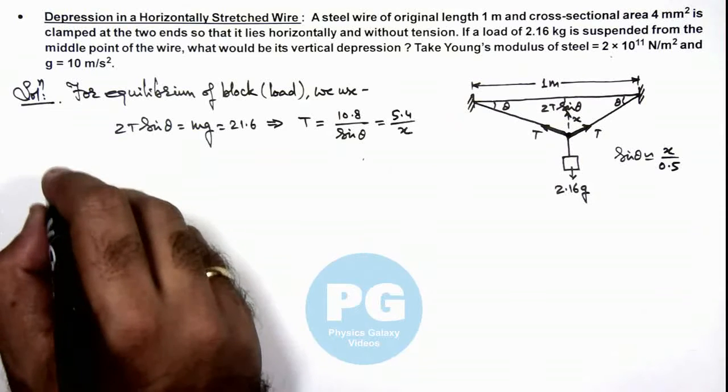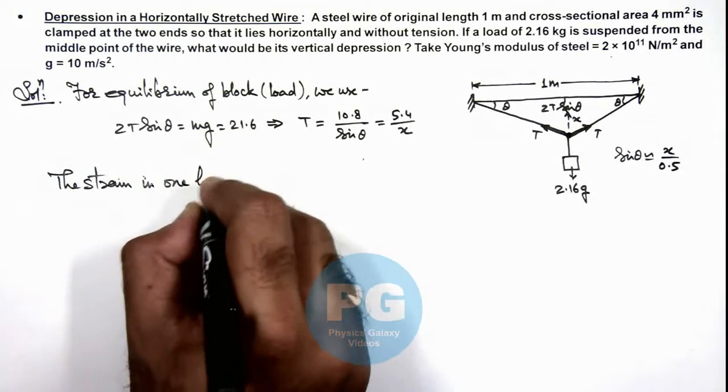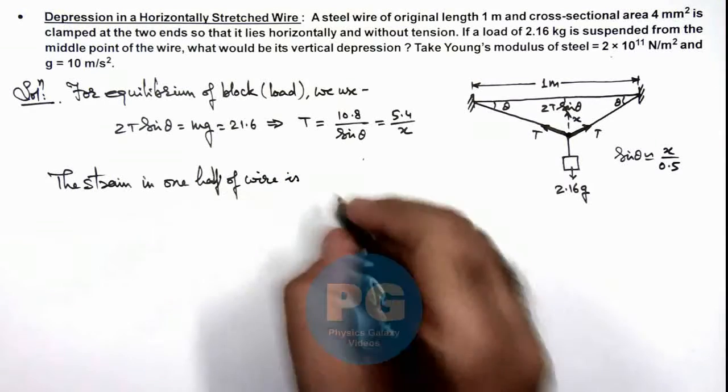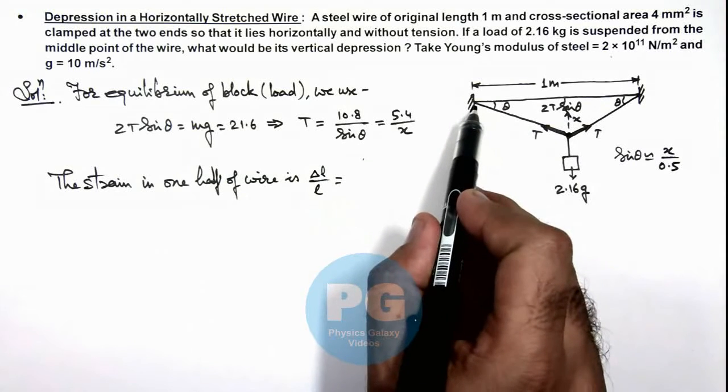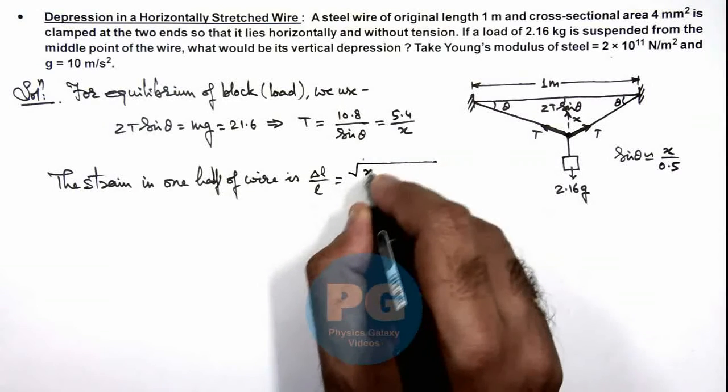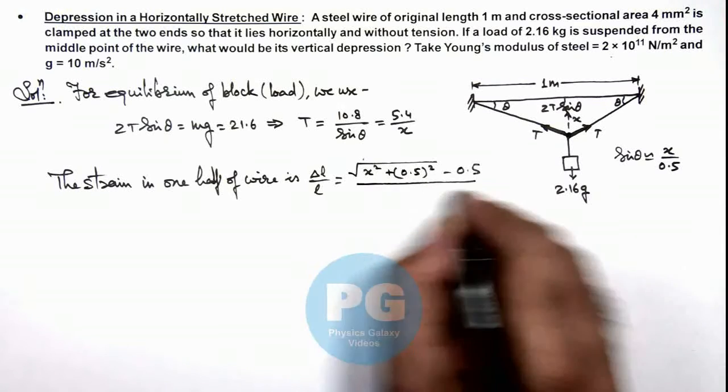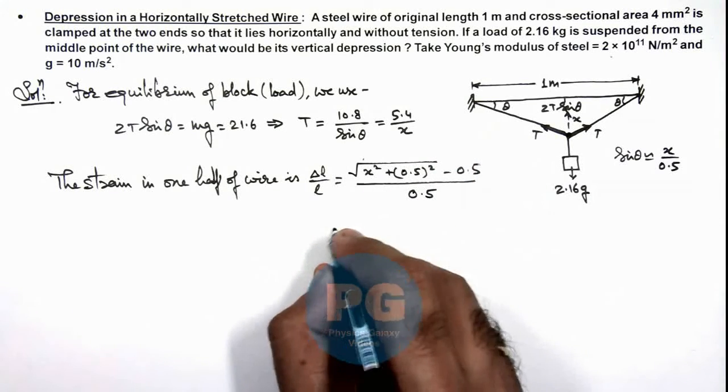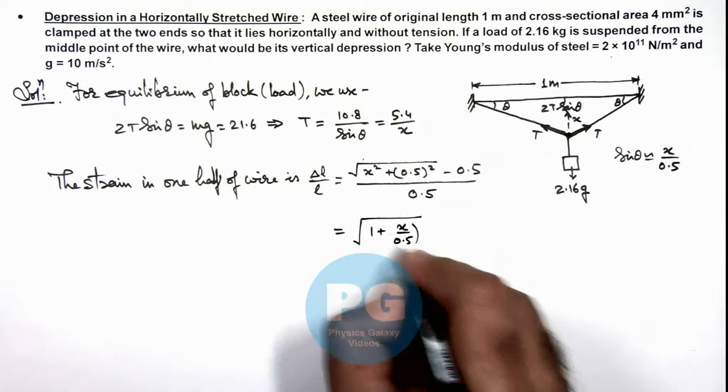And if we calculate the strain in one half of wire, here we can calculate the strain as delta L by L, that is equal to the length after elongation of this wire minus initial elongation. We can write it root of x square plus 0.5 square minus 0.5 divided by 0.5. This is the strain in this left half of wire, which on simplifying we can write this is root of 1 plus x by 0.5 whole square minus 1.